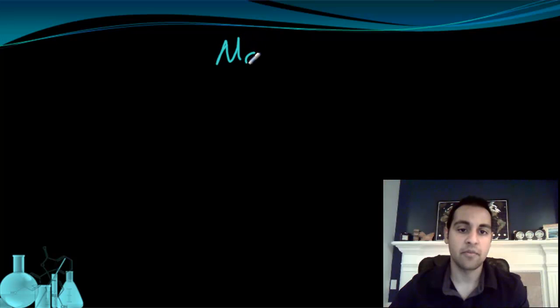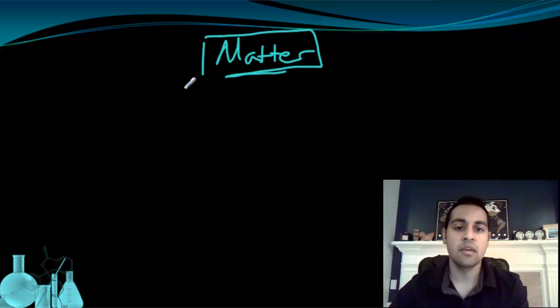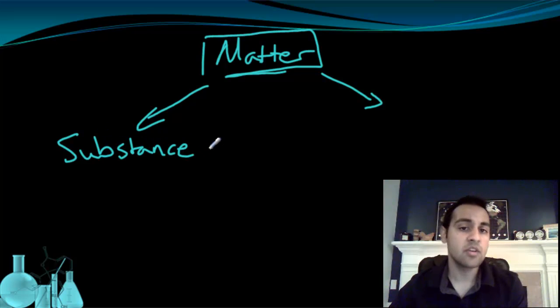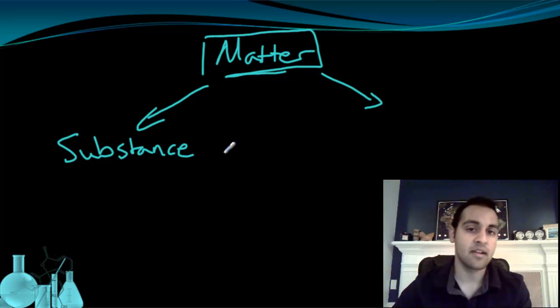So let's take a look at how we can organize what we know about matter and how we can classify it. So let's start with matter. And what we're going to see is we can split matter into two categories. The first category that we can put matter into is that of a pure substance.